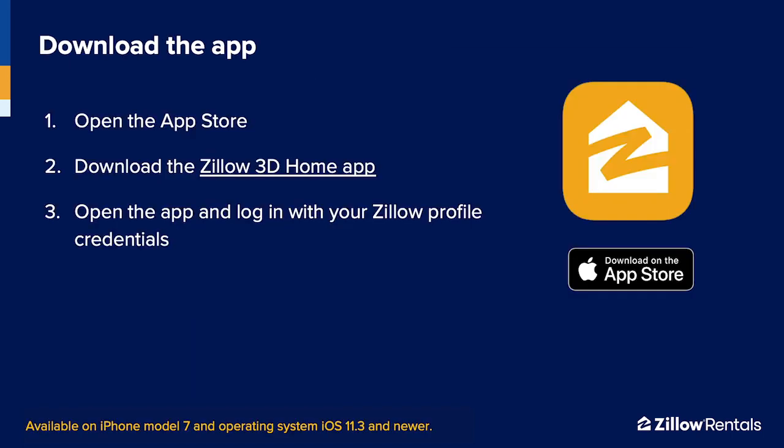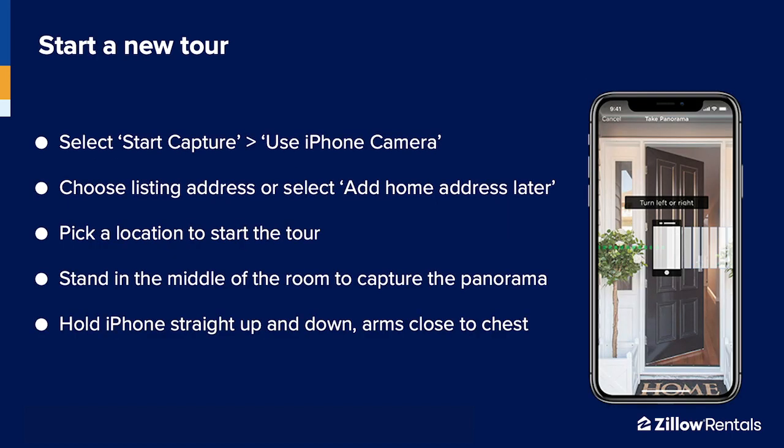Next, let's dive into the app and shooting your tour. Open the app store and download the Zillow 3D Home app. Note that you'll need an iPhone 7 or above. Zillow 3D Home is not currently available on Android. After you download the app, open it and log in with your Zillow credentials or create a Zillow profile if you don't have one. From the app's home screen, tap the start capture button, then select use iPhone camera.